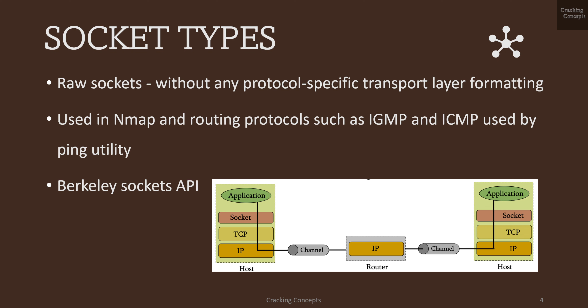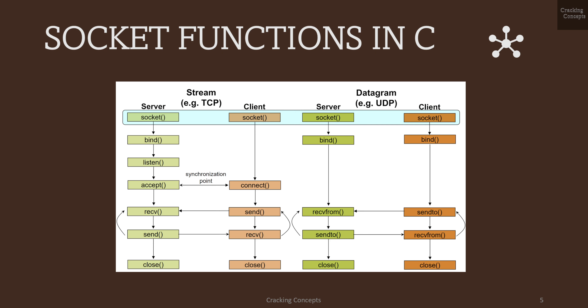The sockets we are creating here are called Berkeley sockets, so we'll be using the Berkeley socket API. This picture shows how two hosts communicate with each other through sockets — each socket has an IP address and port number, connected through a router. The diagram here shows the different functions used in both TCP and UDP, at both the server and client side.